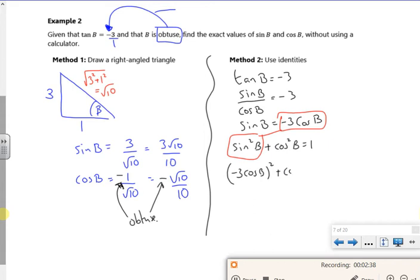Cos B squared. So I've got 9 plus 9... cos squared B plus cos squared B is 1. So I've got 10 cos squared B is 1. Cos squared B is a tenth.